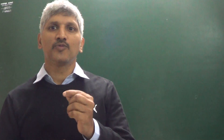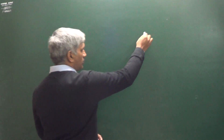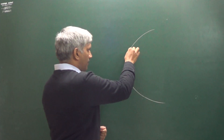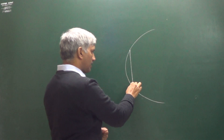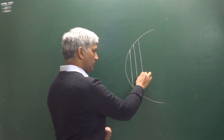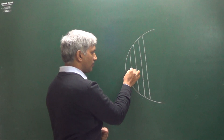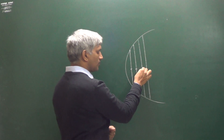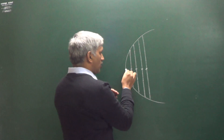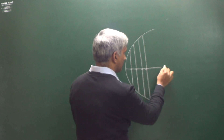In this class I want to discuss a simple idea: what is a diameter of an ellipse? You see this is a parabola and these are the system of parallel curves. The locus of the middle point of a system of parallel chords to a parabola is called the diameter. All these points' locus is called the diameter of a parabola.